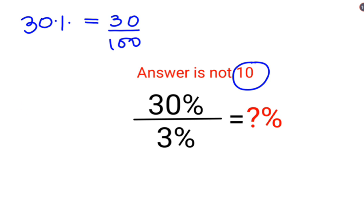So 30% can be written as 30 upon 100, divided by 3%, which is 3 upon 100. Now whenever there is a fraction involved in division, you will follow the acronym KCF, where K stands for keeping the first number as it is.